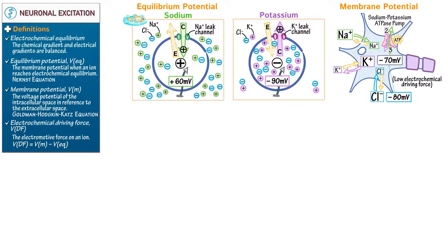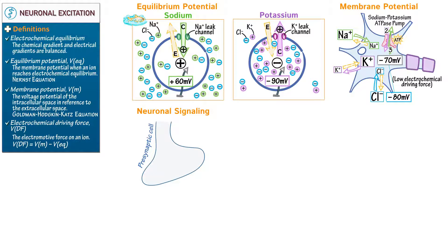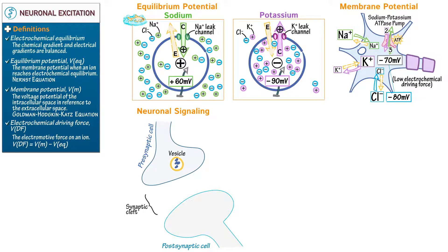Now let's learn the basic cellular physiology of neuronal signaling. Draw a synapse, which comprises a presynaptic cell foot process (the axon terminal), the postsynaptic cell dendrite (the target), and the synaptic cleft between the two. Draw a synaptic vesicle in the presynaptic cell and fill it with neurotransmitters, which provide communication between the pre- and postsynaptic cells.